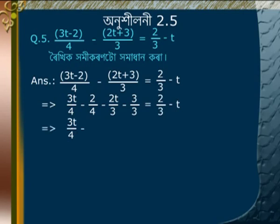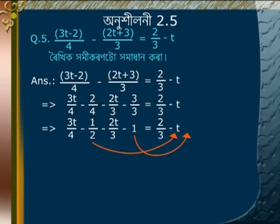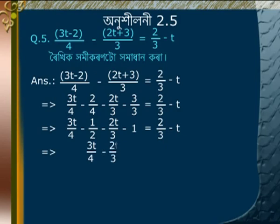Simplifying: 3t/4 minus 1/2 minus 2t/3 minus 1 is equal to 2/3 minus t. Transposing: 2/3 minus 2t/3 plus t is equal to 2/3 plus 1/2 plus 1.